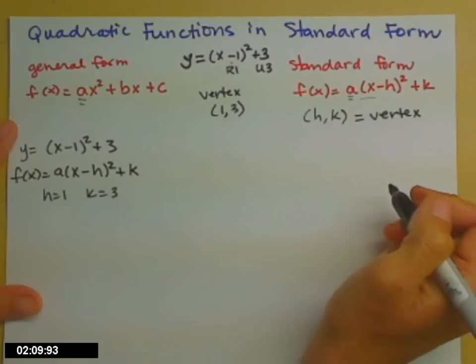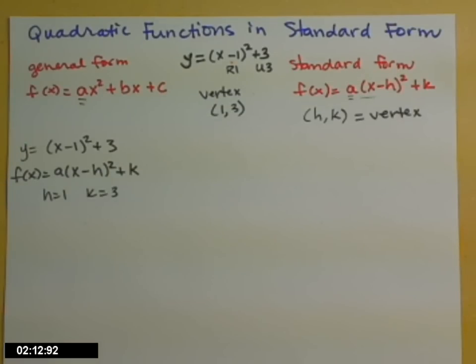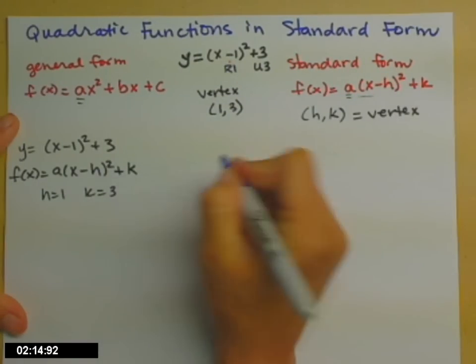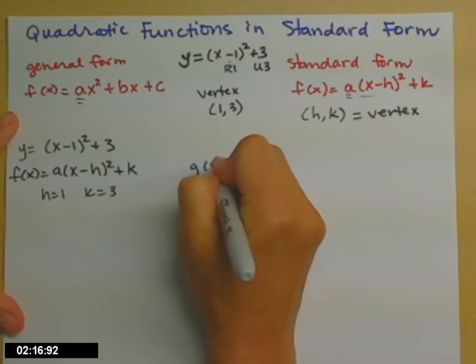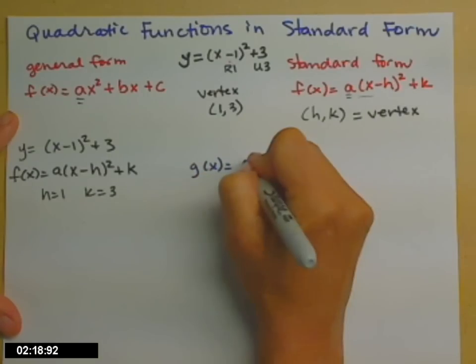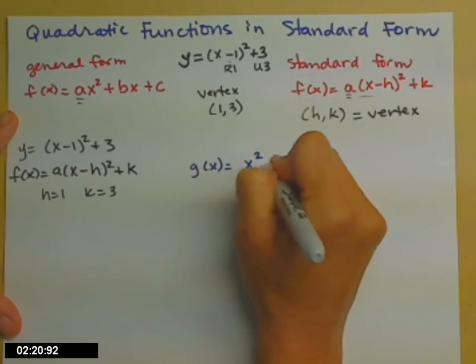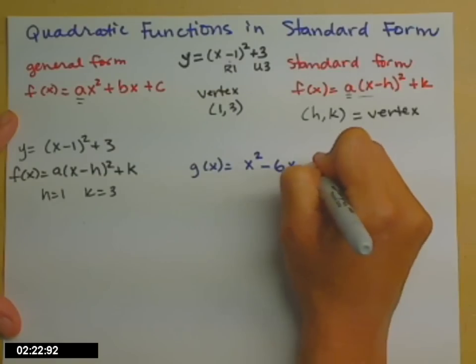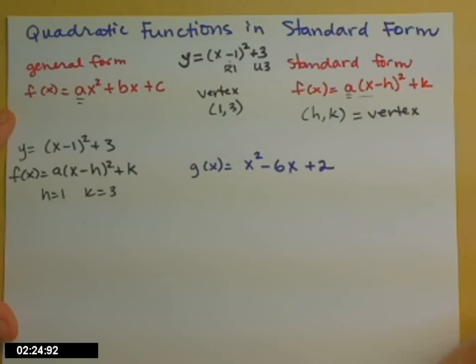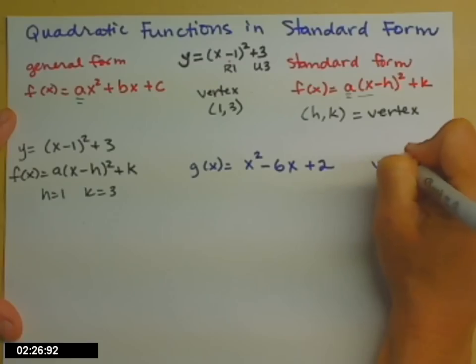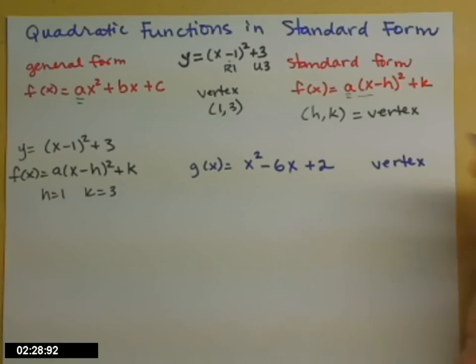Now, what if you are given, and you will be, a quadratic function that isn't in standard form? So let's grab a new one. g of x equals x squared minus 6x plus 2. And I ask you to find the vertex. Well, you cannot see it just by looking at this function, the way it's written now, in the general form.